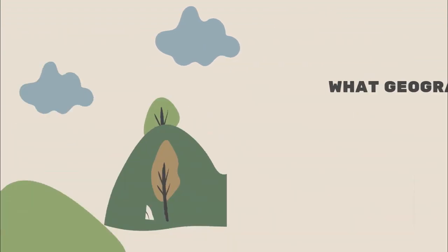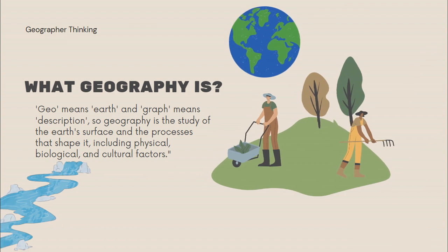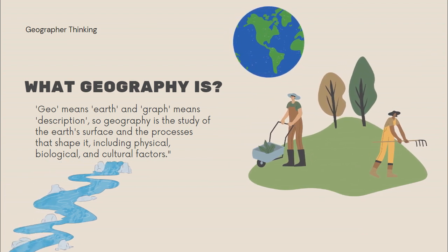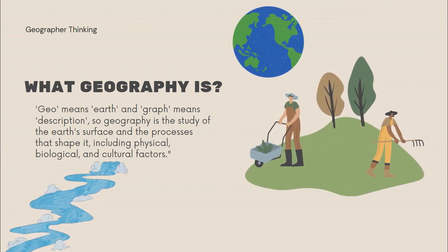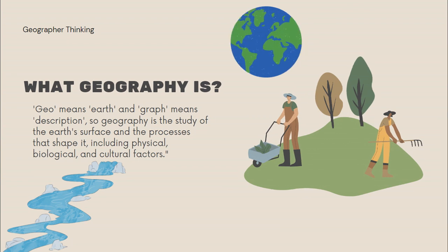Geo means Earth and graph means description. So Geography is the study of the Earth's surface and the processes that shape it, including physical, biological, and cultural factors.